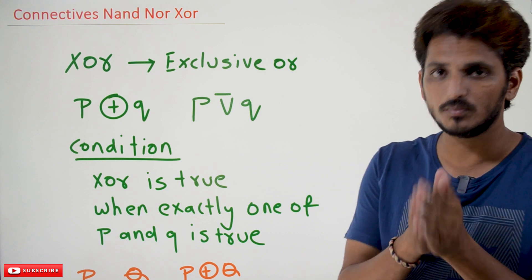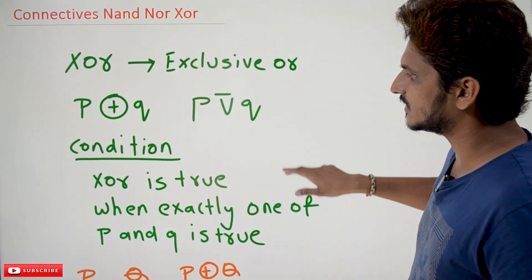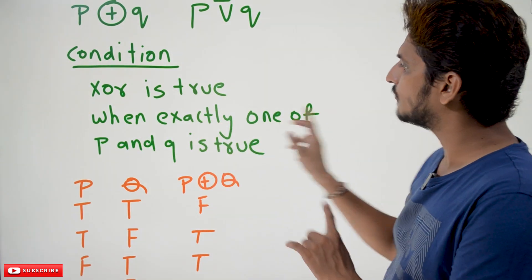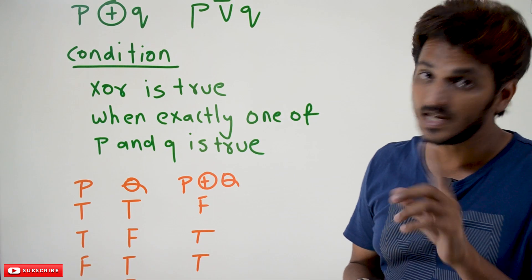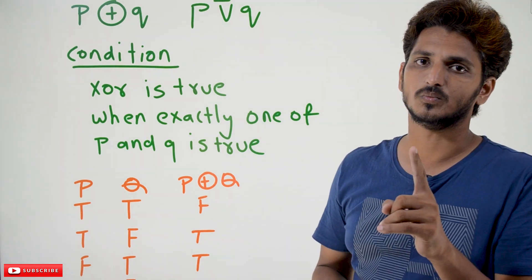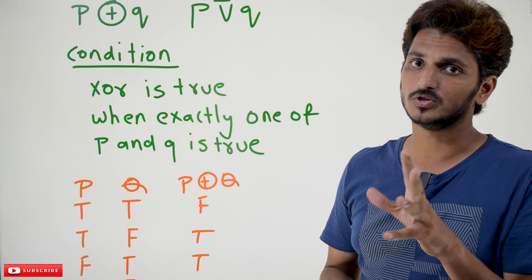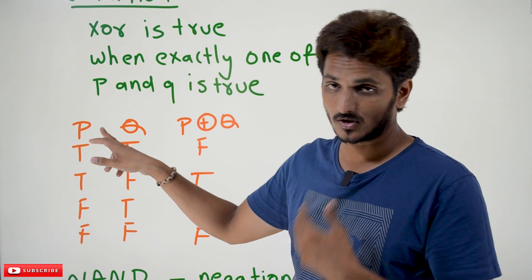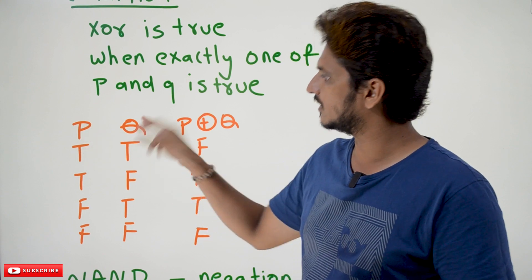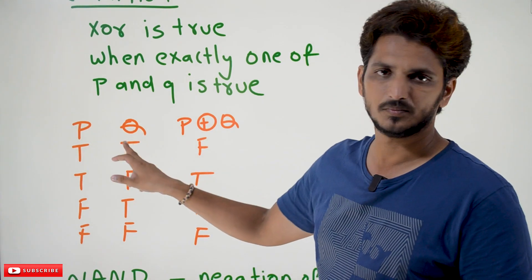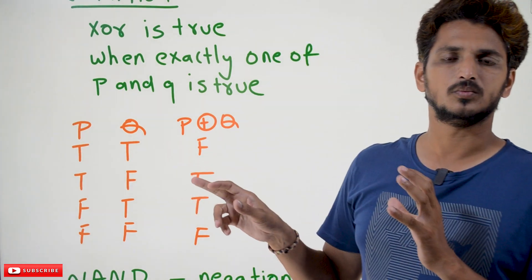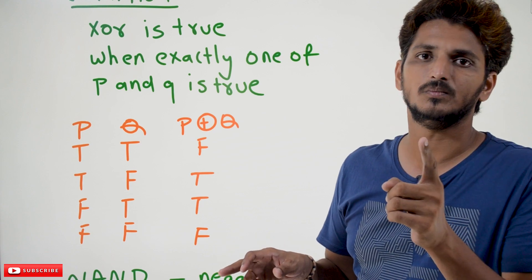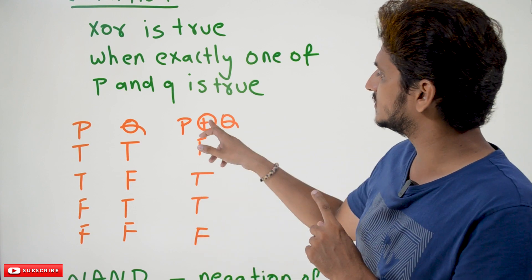For every connective we have conditions for when it is true and when it is false. Similarly, XOR has a condition: XOR is true when exactly one of P and Q is true — not both. So looking at the XOR truth table: when P is true and Q is true, both are true, so exactly one is not satisfied — XOR is false.